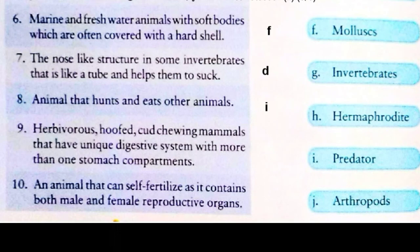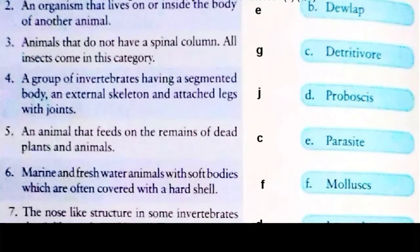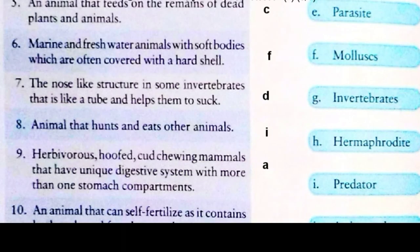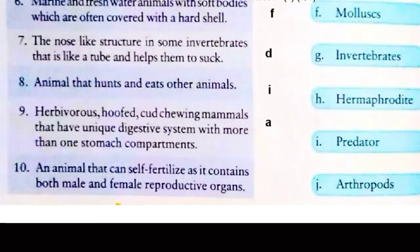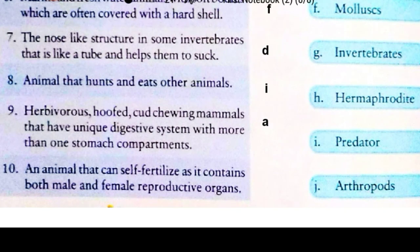Question 9: herbivorous hooved cud-chewing mammals that have a unique digestive system with more than one stomach compartment — this term is known as ruminants, option A. Question 10: an animal that can self-fertilize as it contains both male and female reproductive organs — this term is known as hermaphrodite, option H. We have completed exercise number 12.